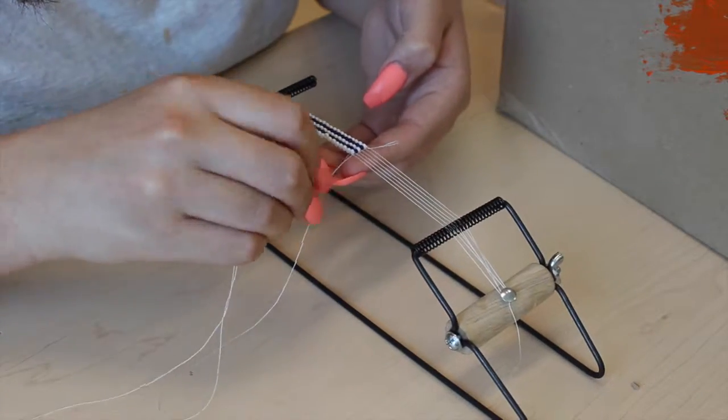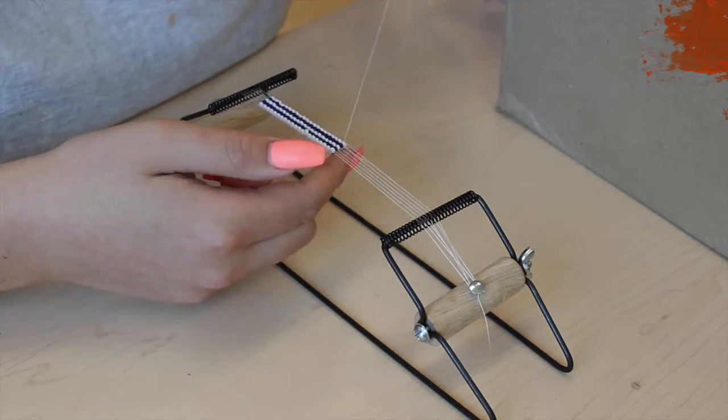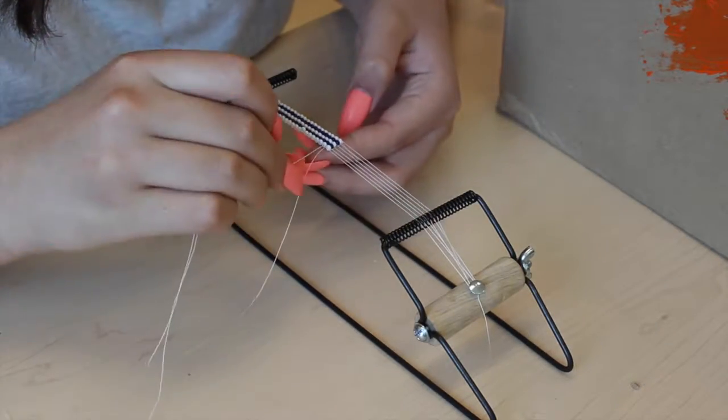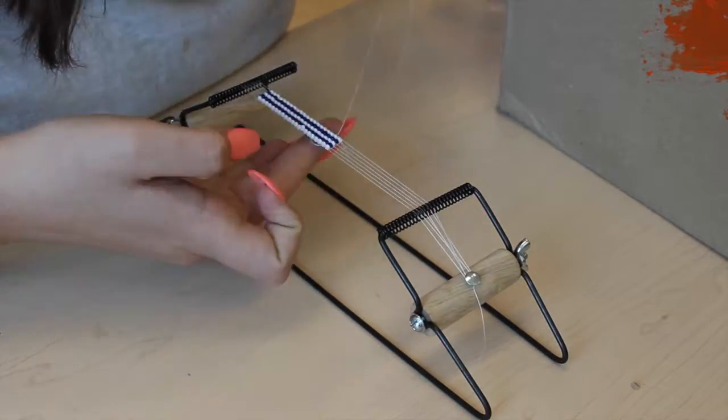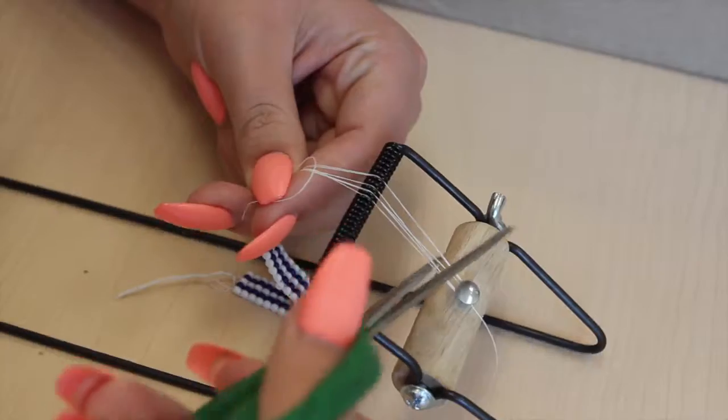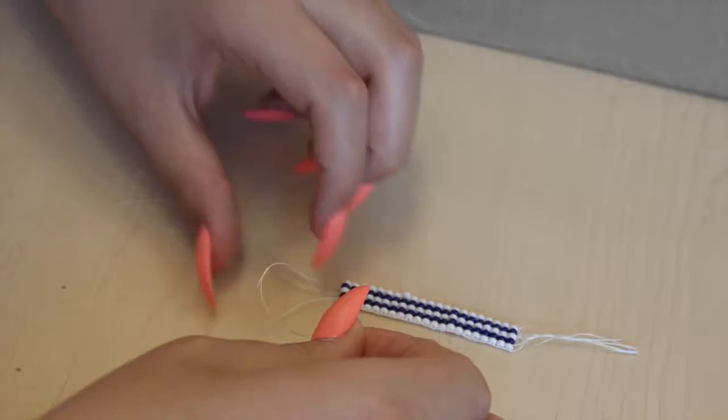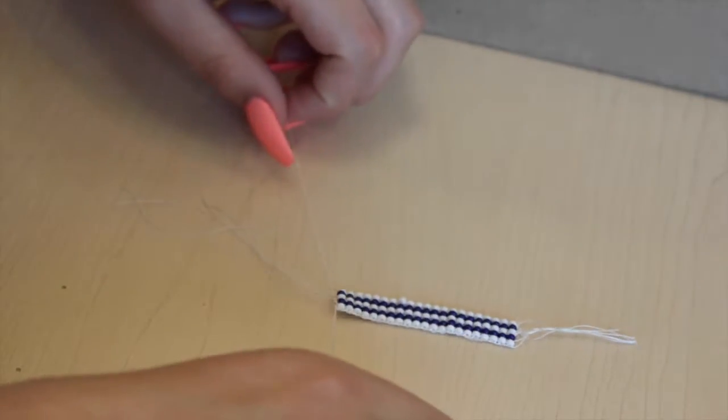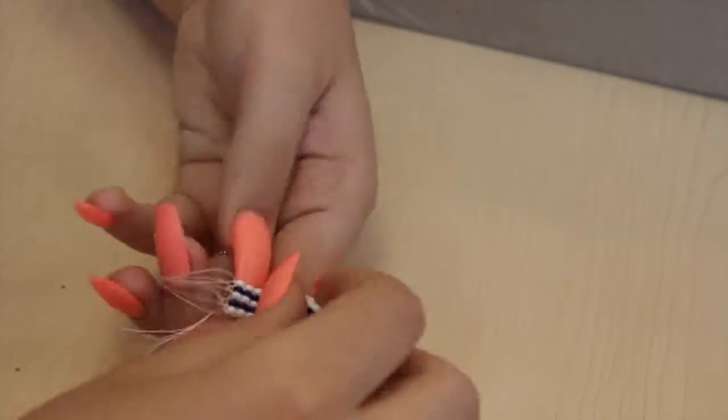Then backtrack through two lines of beads and forward again. Cut your strings from the loom and knot each string together. Then one large knot at each end.